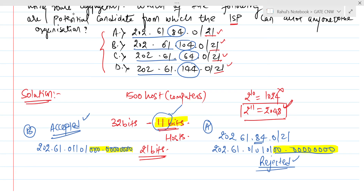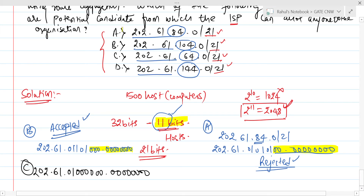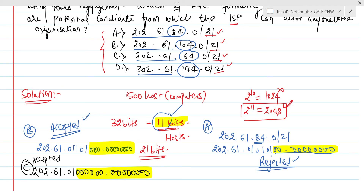For Option C: 202.61.64.0/21. Writing 64 in binary gives 01000000, and the fourth octet is 00000000. The number of host bits here is 8 plus 6 = 14 bits. We only need 11 bits as host bits, but this still satisfies the condition, so Option C is also accepted.